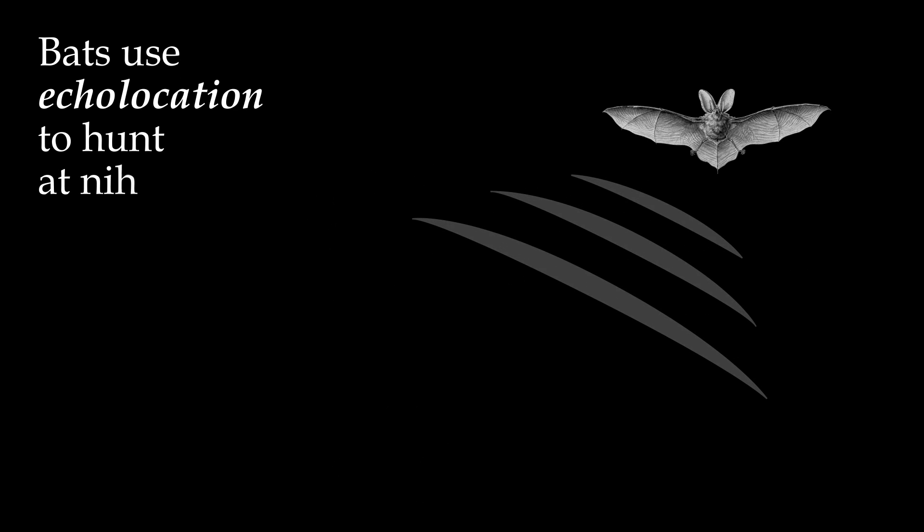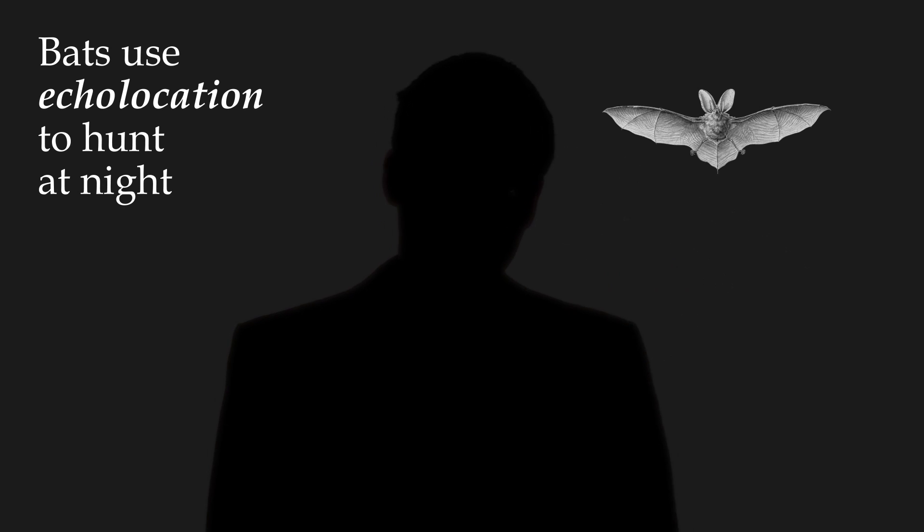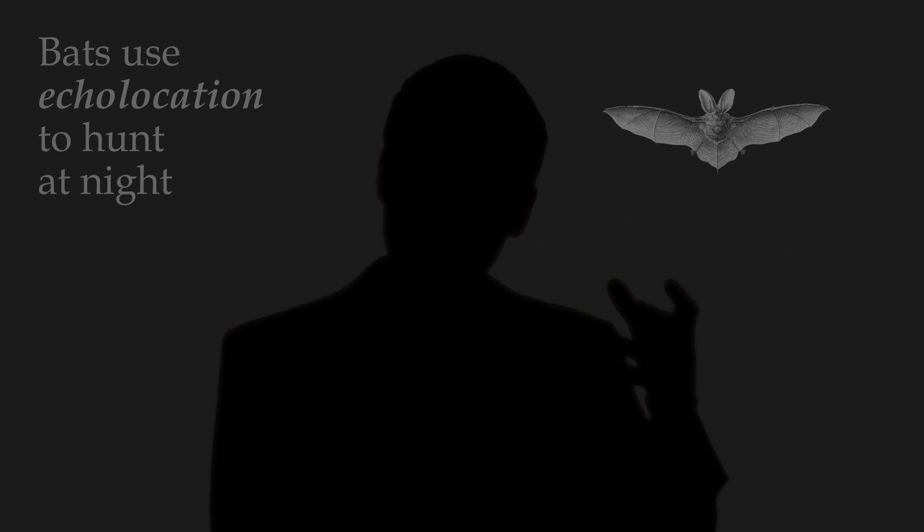Bats use echolocation to hunt at night and some have a weird shape on their nose known as a nose leaf, which they use to broadcast their high-pitched squeaks.